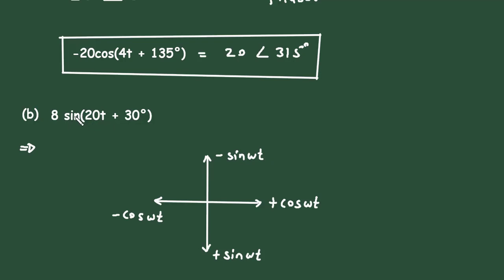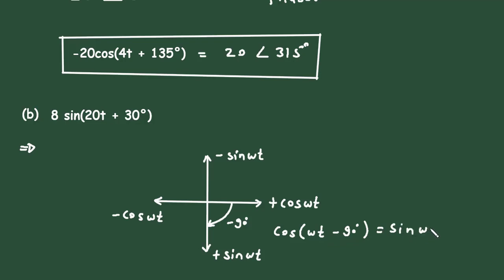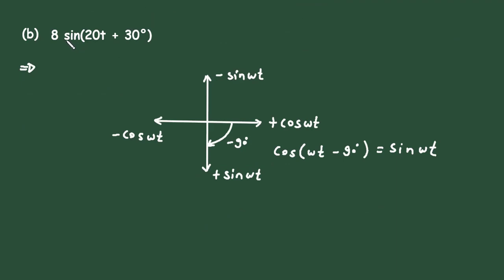We need to convert from sine to cosine. Moving from sine to cosine is in the opposite direction, meaning the angle is −90°. So the formula is: cos(ωt − 90°) = sin(ωt). To convert this expression from sine to cosine, it becomes 8·cos(20t + 30°), and we must add −90°.